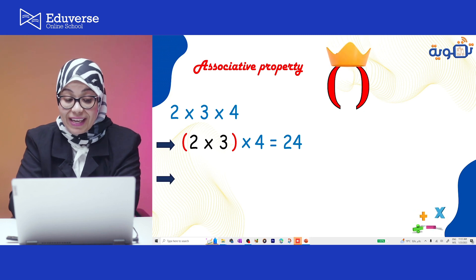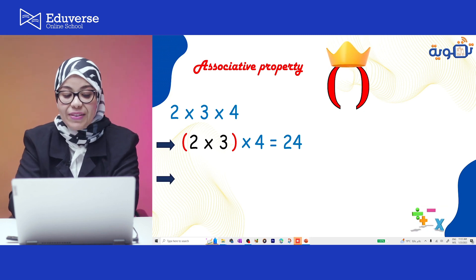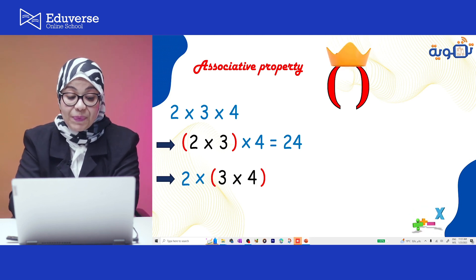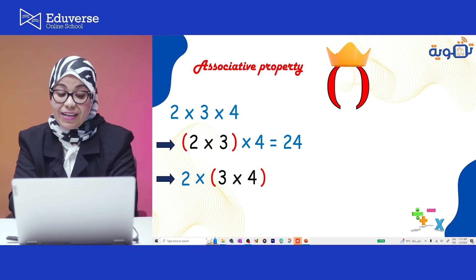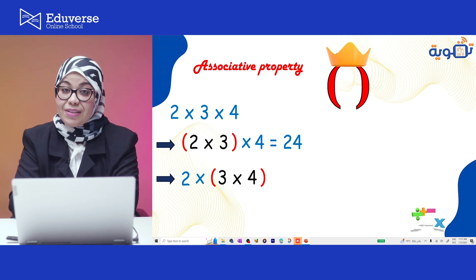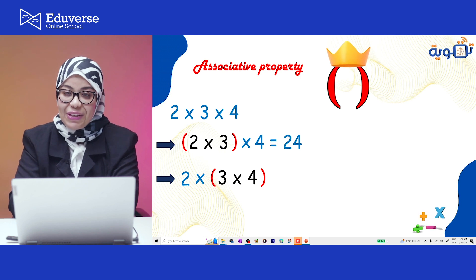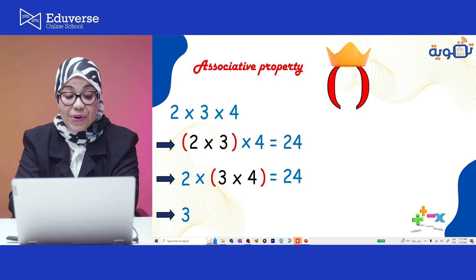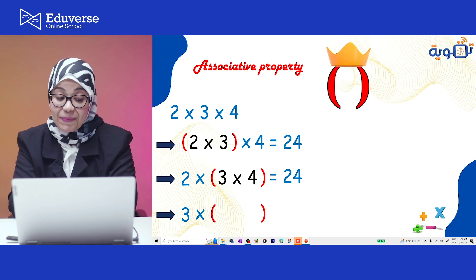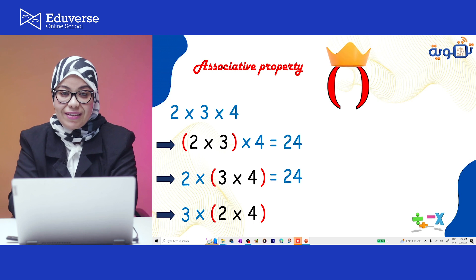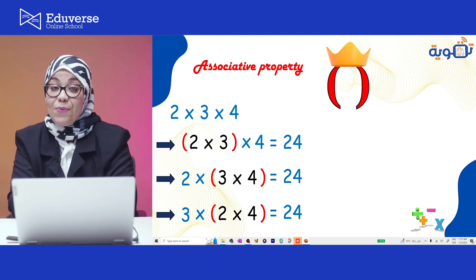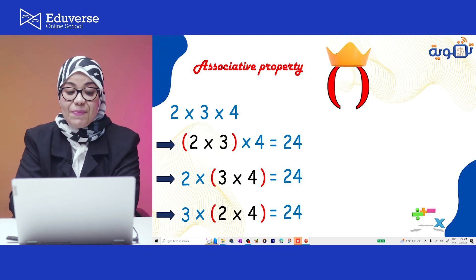Another way: I'm gonna change the factors inside the parentheses — 2 outside, and this time 3 and 4 inside. 3 times 4 equals 12, and 2 times 12 equals 24. Another way: 3 outside and this time 2 and 4 inside the parentheses. 2 times 4 equals 8, and 3 times 8 equals 24. In all 3 ways, we got the same answer.